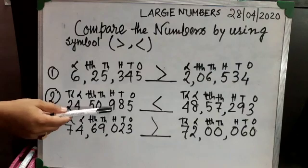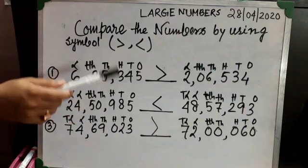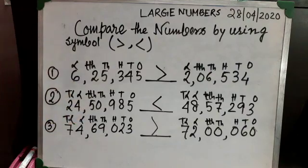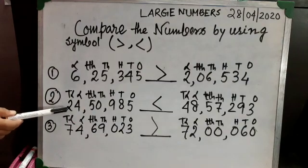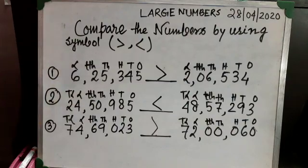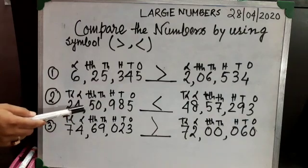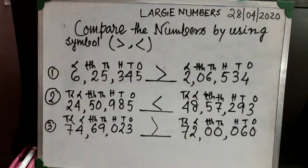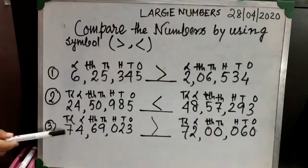My second example is a slightly bigger number. I have written twenty-four lakh fifty thousand nine hundred eighty-five, and the other number is forty-eight lakh fifty-seven thousand two hundred ninety-three. You can easily understand that twenty-four lakh is smaller than forty-eight lakh, so twenty-four lakh fifty thousand nine hundred eighty-five is the smaller number.